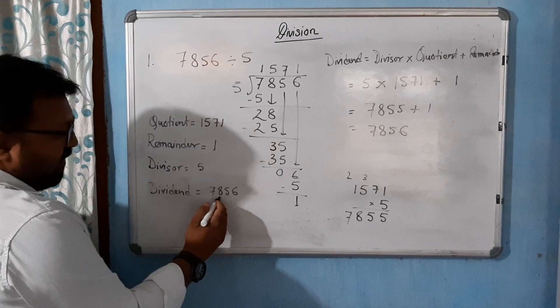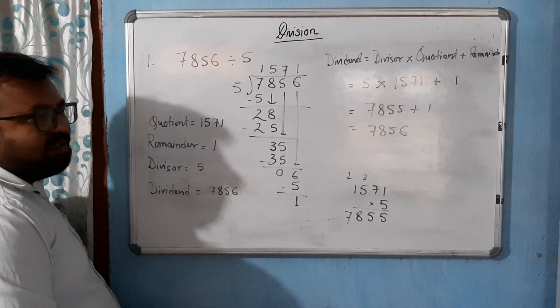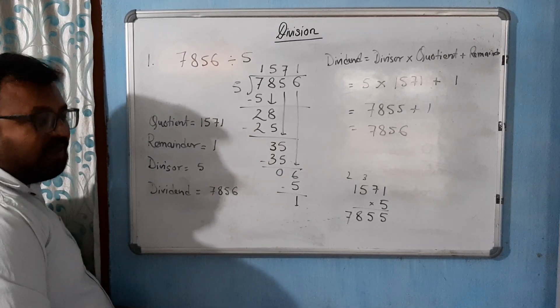Ultimately, the dividend is 7856. So, check. Hence, verified. Is that clear? So, in this way, we will try to...